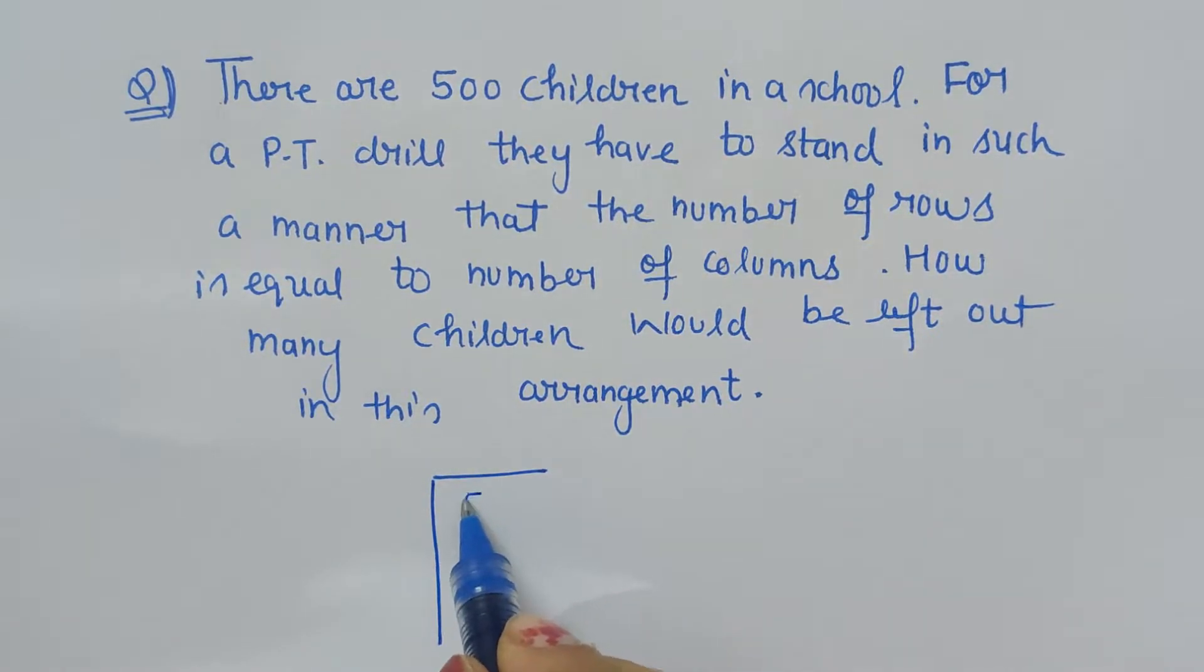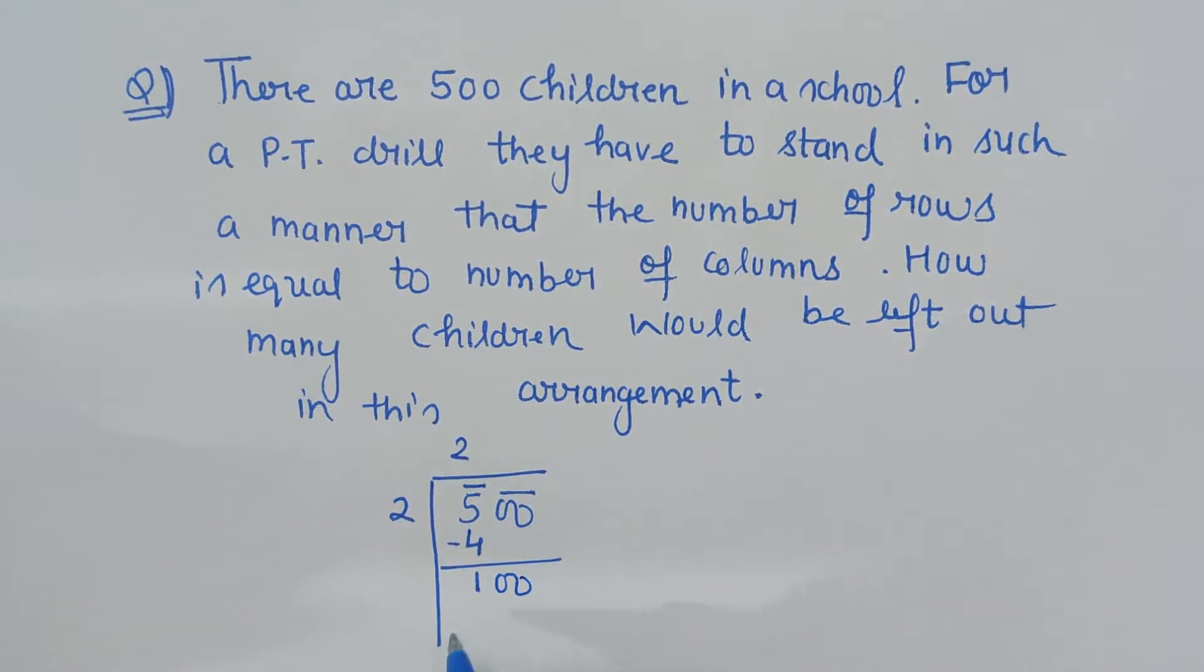Let's find the square root of 500. Pair it from the right-hand side, and 5 is left unpaired, so keep it as it is. The nearest perfect square is 4, so the remainder is 1, and bring down double 0.